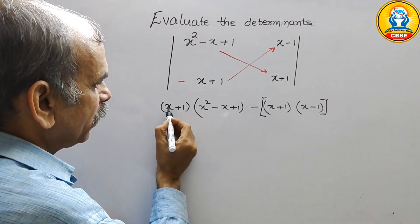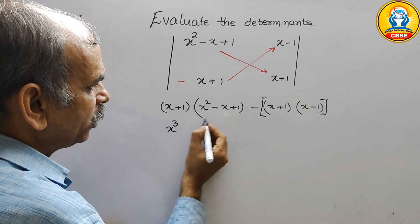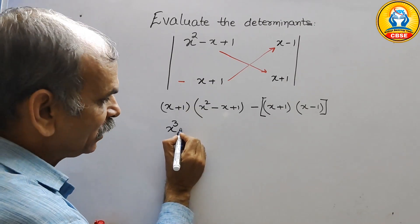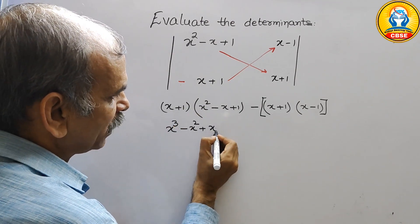Now solve this. x into x square is x cube. x into minus x is minus x square. x into 1 is plus x.